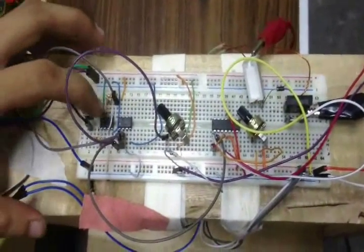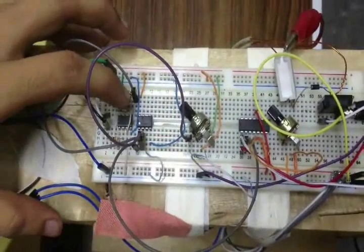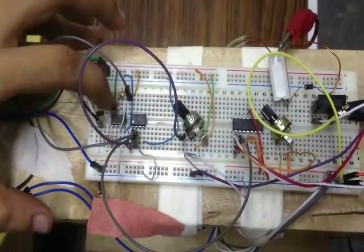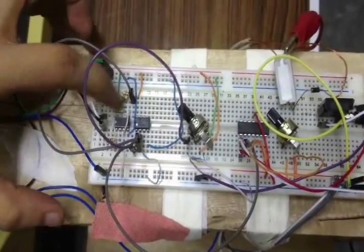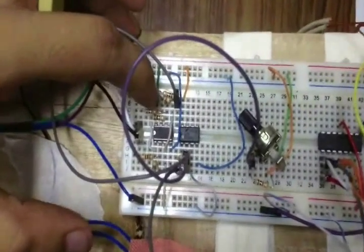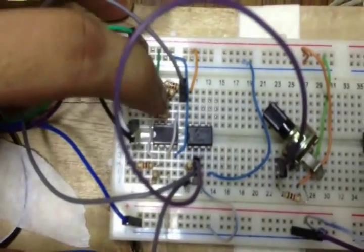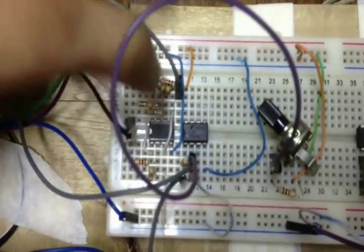In this first op-amp, we invert the reading from the top Hall effect sensor. This output then goes to the second op-amp, where it gets added with the reading from the bottom Hall effect sensor. The result is the difference between the two Hall effect sensors.